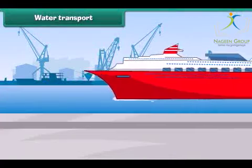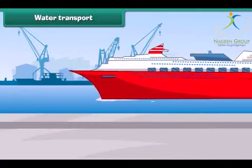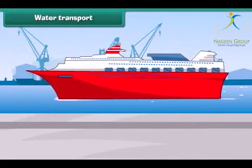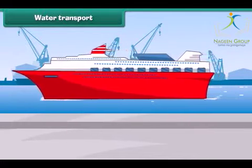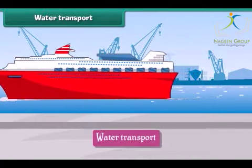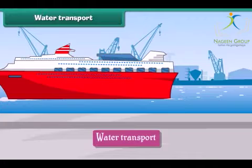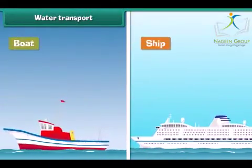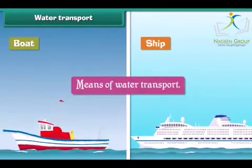Water transport: the movement of goods and passengers on water is called water transport. The vehicles that carry goods and passengers through waterways are called means of water transport. Boats and ships are the means of water transport.